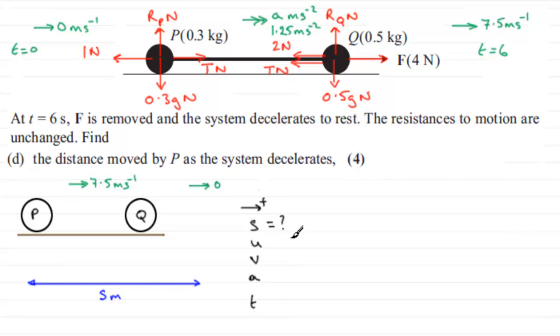Well, certainly S we want to find. U, we know that, U is 7.5. The final velocity, we know that, it's going to be zero. But we don't know the acceleration. We knew the acceleration in the previous part, when F was there, it was 1.25. But F has been removed, so we don't know that acceleration. And we don't know the time that it takes to go from 7.5 to 0 metres per second. So what we're going to need to do is work out what the acceleration is. And that means we're going to need to consider the forces.